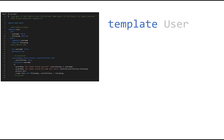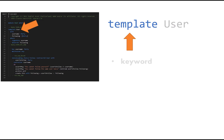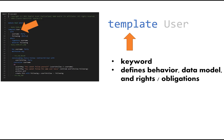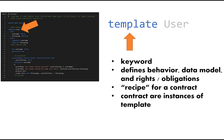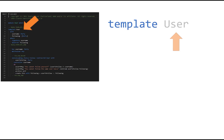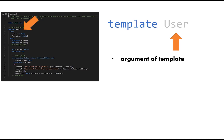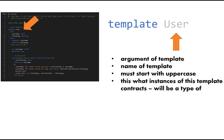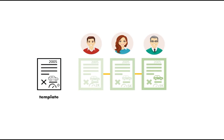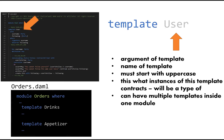Now comes the fun part: the template. The template keyword defines the behavior, the data model, and the rights and obligations — in other words, it is the recipe for a contract. Contracts are instances of a template. Template takes an argument which is the name of the template; in this case it happens to match the module name, but it doesn't have to. It must start with an uppercase. The name is what contracts produced by it will be a type of. It's also possible to have multiple templates inside a module — for example, a module called 'Orders' could have a template for drinks and a template for appetizers.